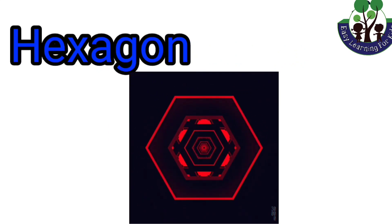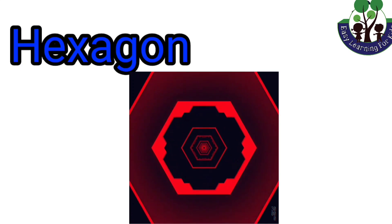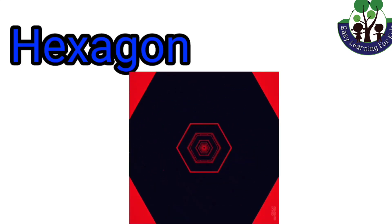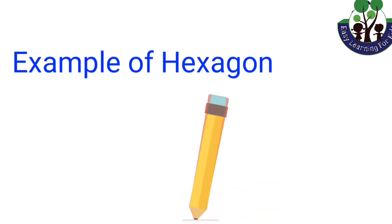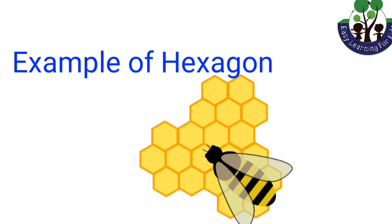Hexagon. A hexagon is a two-dimensional geometric polygon that has six sides and six angles. It has no curved sides and all the lines are closed. For example, pencils and honeycomb.